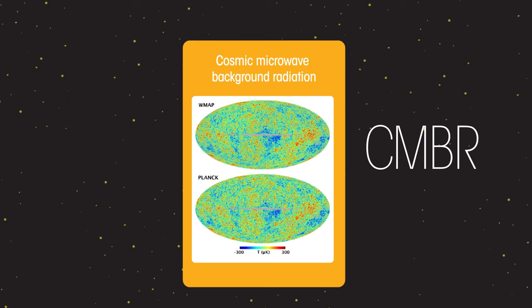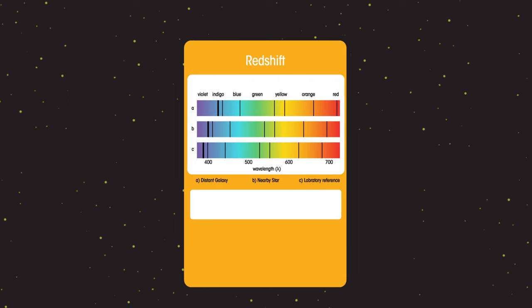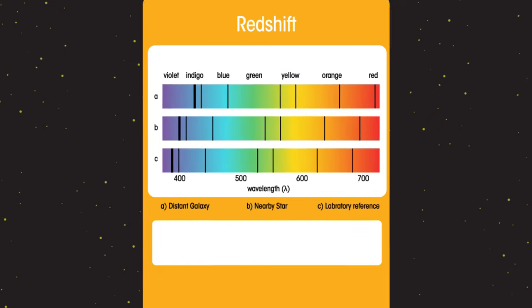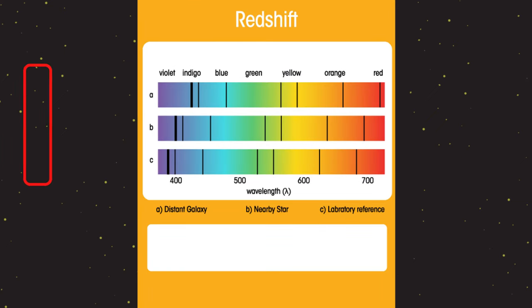So what about the other evidence for the Big Bang? Redshift. Redshift shows how the light from distant stars is shifted to the red end of the spectrum as the wavelength increases.